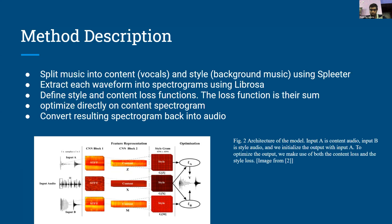We used the defined content and style loss functions. The total loss function was the sum of both the content and style loss functions. We optimized directly onto the content spectrogram and layered the style spectrogram on top of this using a convolutional neural network. We then finally converted our resulting spectrogram back into audio to generate our final output.